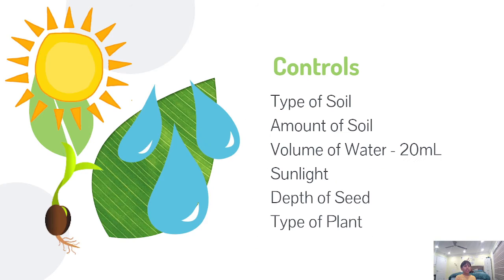These are the controls of the experiment. You can pause the video and read them if you want. I controlled them because they can affect plant growth, to make sure that the type of water is the only variable affecting the plants' growth.